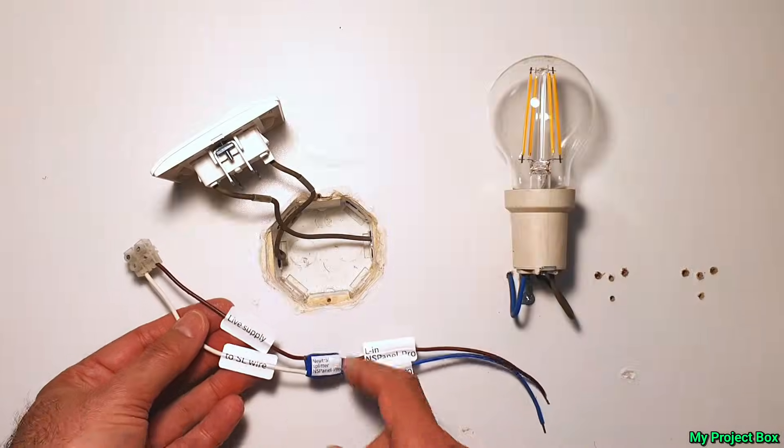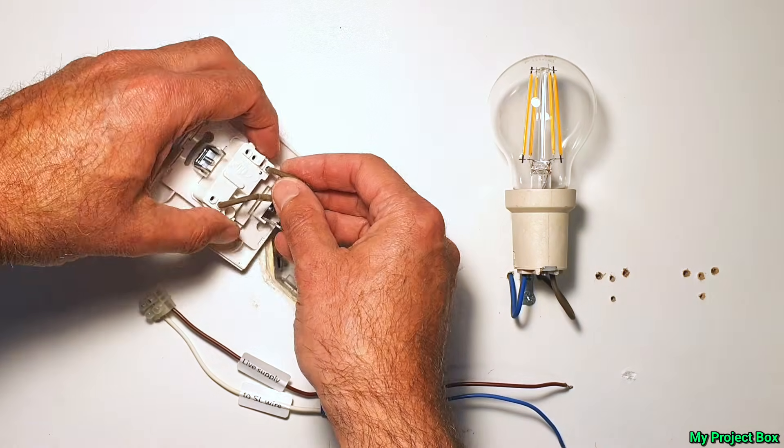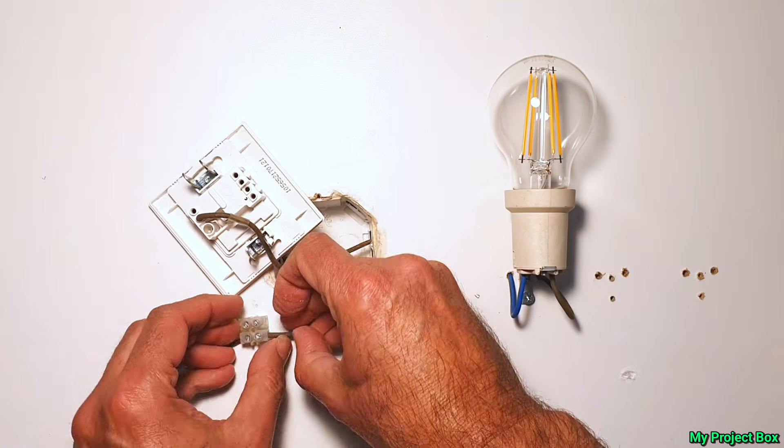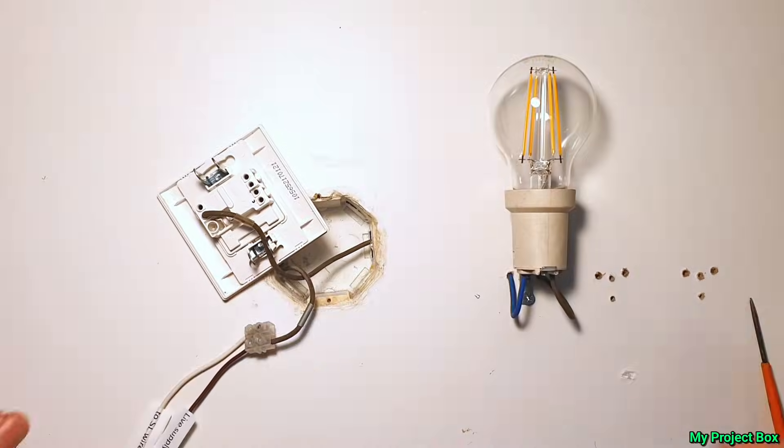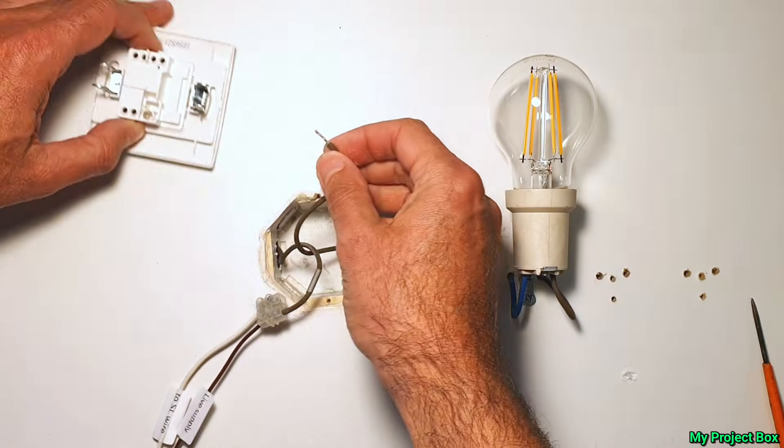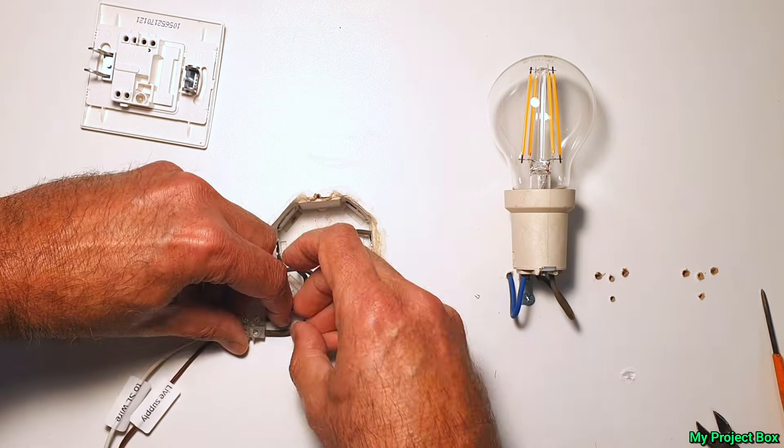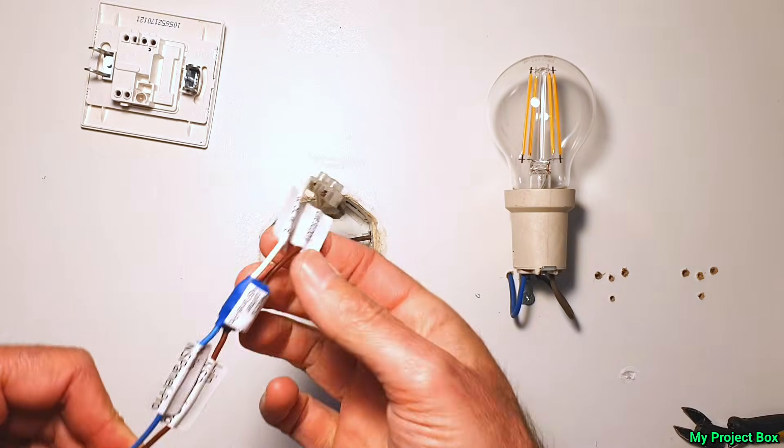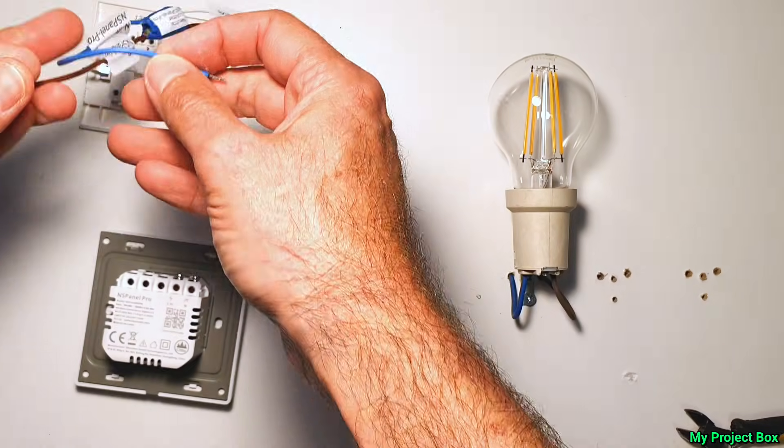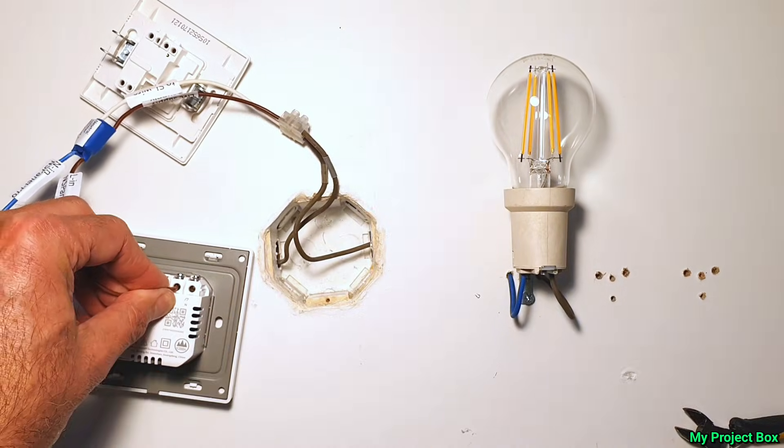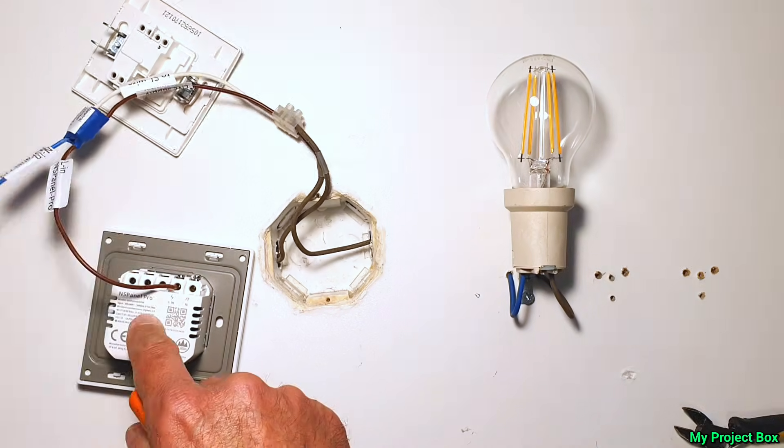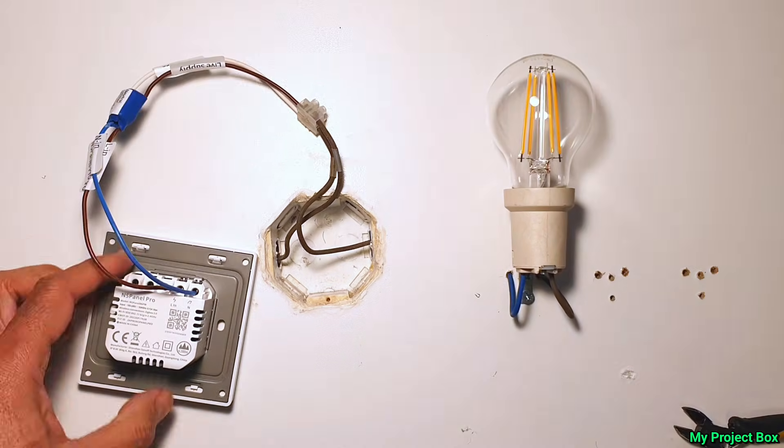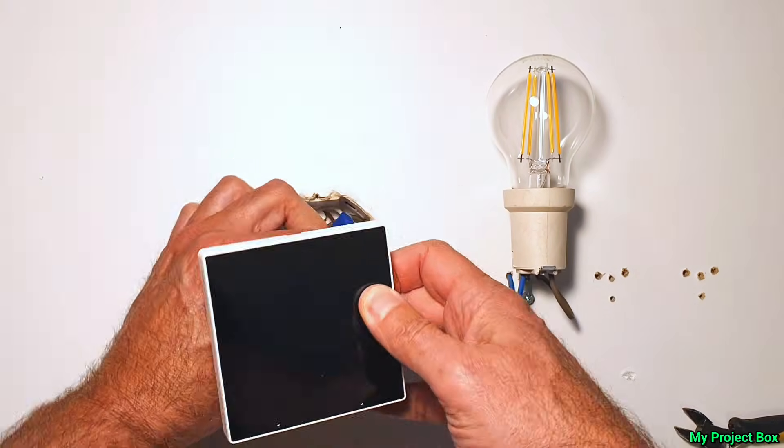We'll start by disconnecting our permanent live supply from the light switch and connecting it to our neutral splitter live in with the connector block. Next we'll disconnect the switch live from the light switch and connect it via the neutral block to our switch live input on the neutral splitter module. Now it's simply a matter of connecting the NS Panel Pro. We'll hook up the live and virtual neutral from our little module. Using brute force and ignorance we jam everything into the back box.